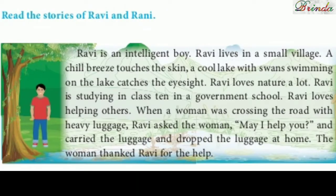There is a short story. We will read now. Read the stories of Ravi and Rani. Ravi is an intelligent boy. Ravi lives in a small village. A chill breeze touches the skin. A cool lake with swans swimming on the lake catches the eyesight. Ravi loves nature a lot.